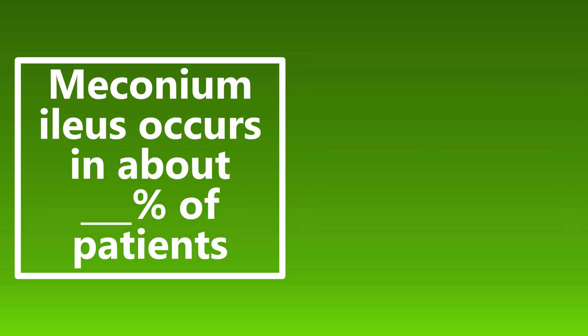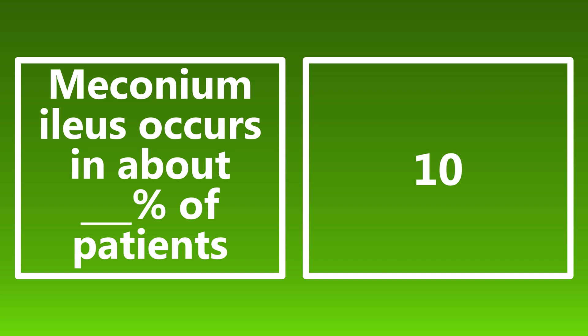Meconium ileus occurs in about 10% of patients — 10% of neonates. Symptoms to look out for with meconium ileus include abdominal distention at birth, failure to pass meconium, and bilious vomiting. If we see those things, that's very concerning for meconium ileus occurring in about 10% of newborns.